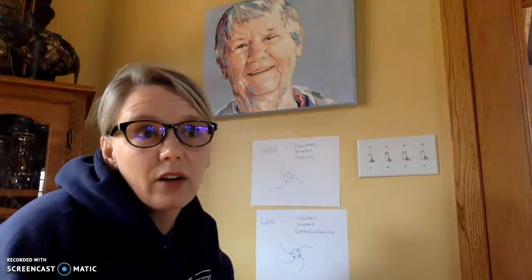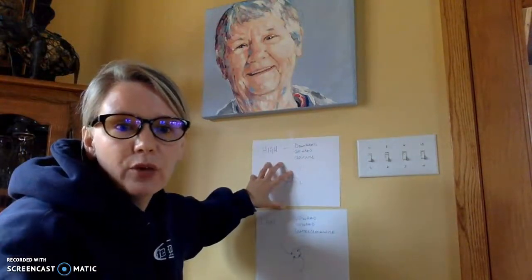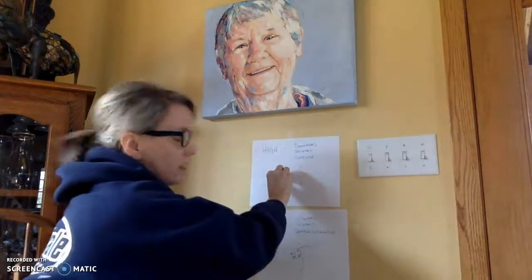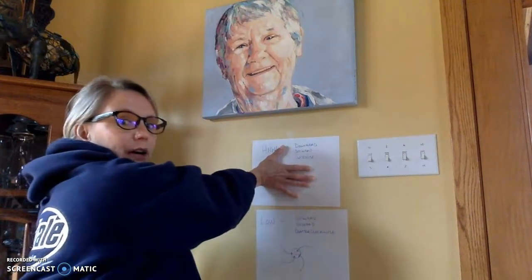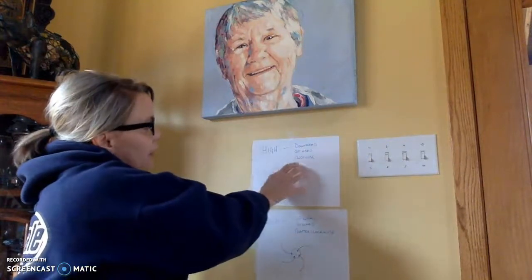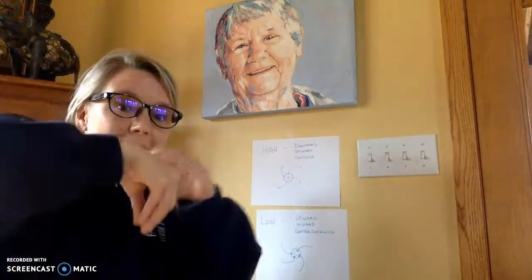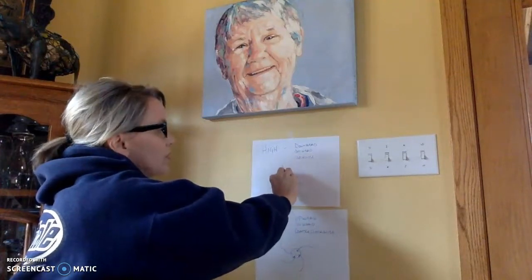There's a memory tool called the hand twist model. For a high pressure system, put your hand over the H on a weather map, fingers together, and move clockwise and outward while pushing the palm of your hand downward. The palm acts like the volume of air pushing from high in the atmosphere down to the ground. That's always the direction the wind moves in a high pressure system.